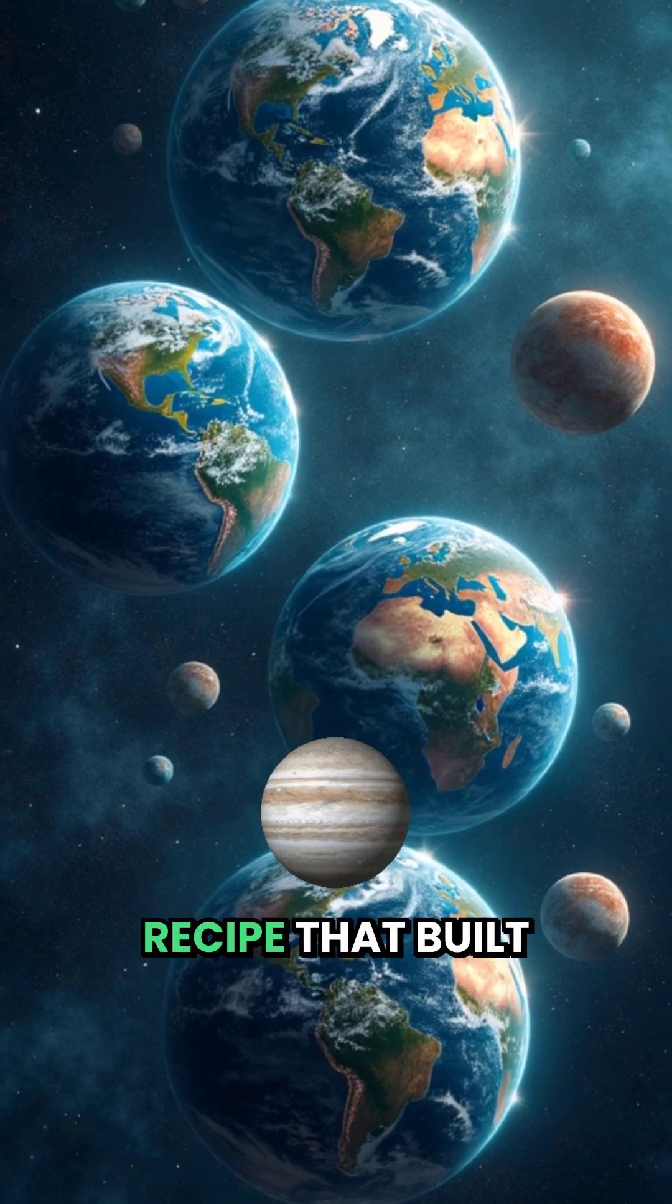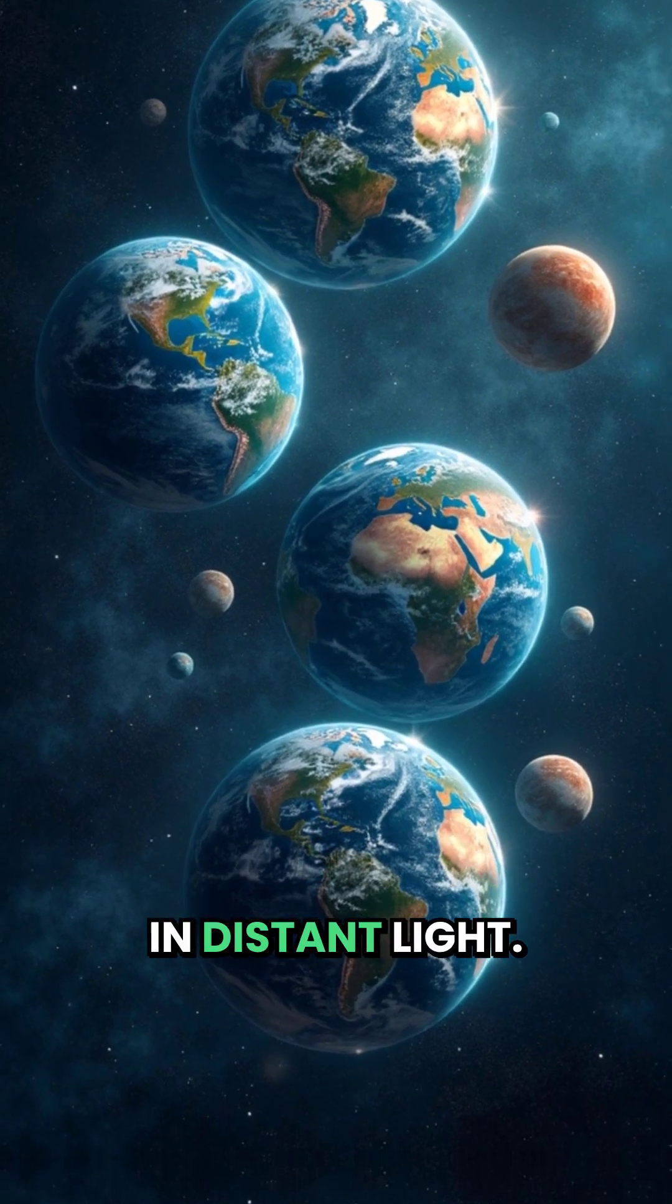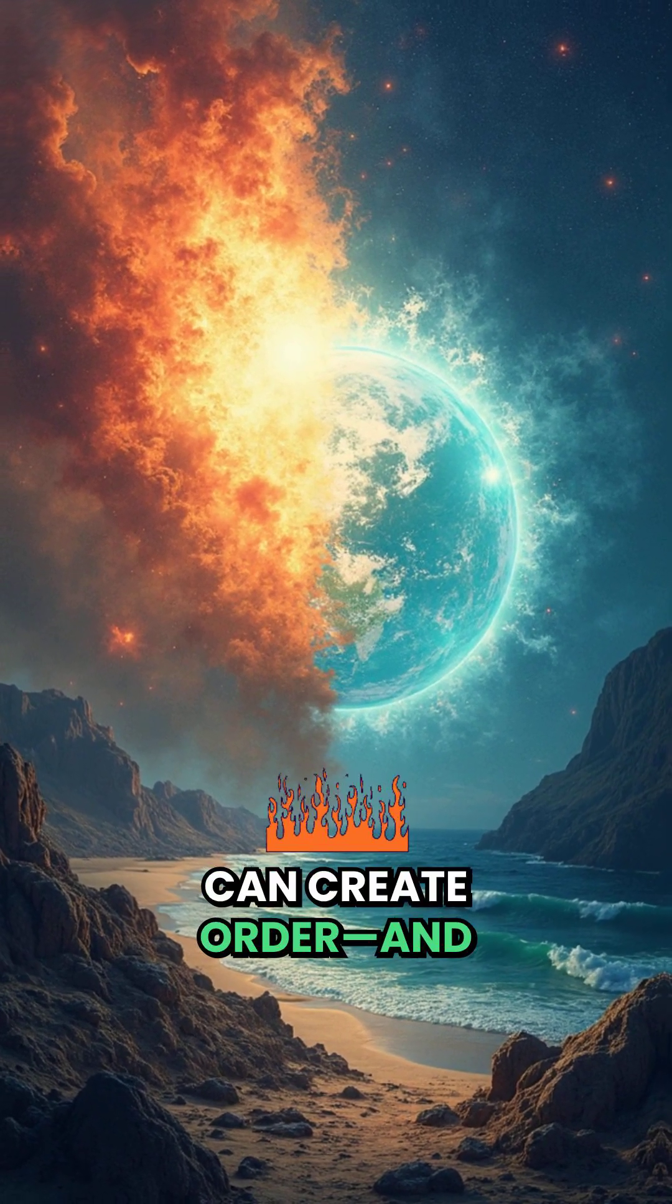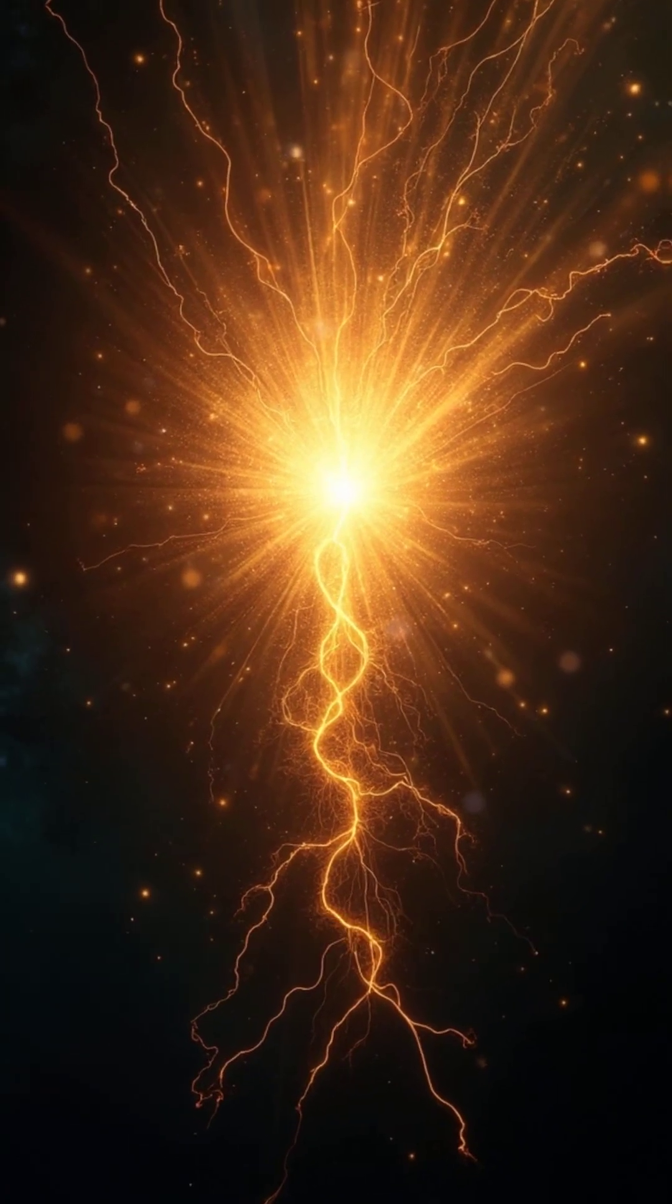The same cosmic recipe that built Earth may have built thousands of other Earths, waiting in distant light. From dust to life, our solar system is proof that chaos can create order, and that every world began with the same spark of possibility.